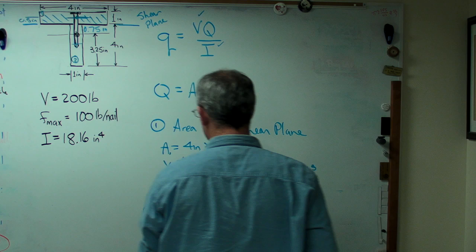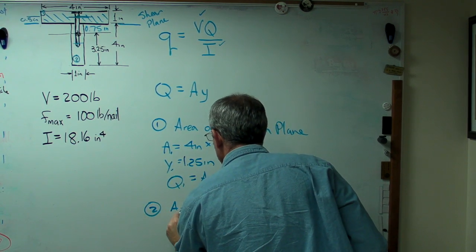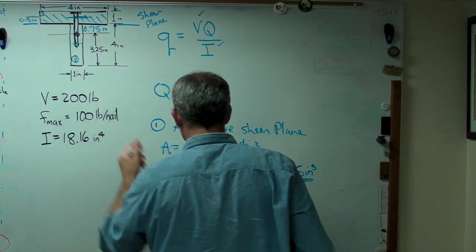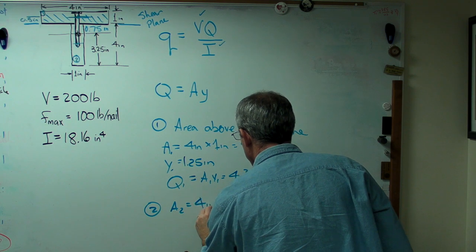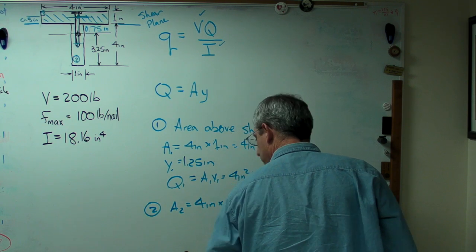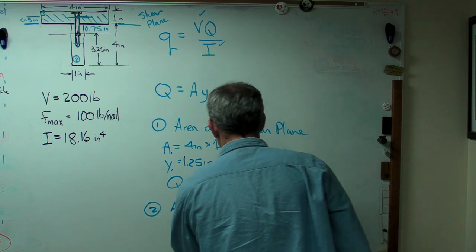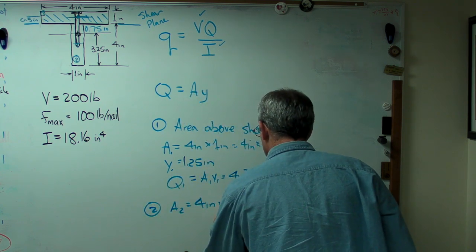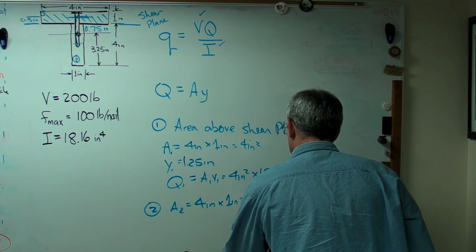The area of the lower box in this case, A2, is now 1 inch wide by 4 inches high. But we're going to come up with the same answer. So it's still 4 inches squared.